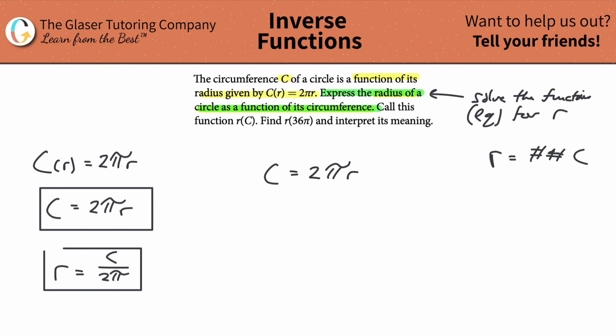Now imagine I'm going to switch my C and my r. So I'm going to write my r here, and I'll write my C over there. Now this is the inverse function basically when I switch it around. But if I want to solve this for C, I'd have to divide out the 2π, right?